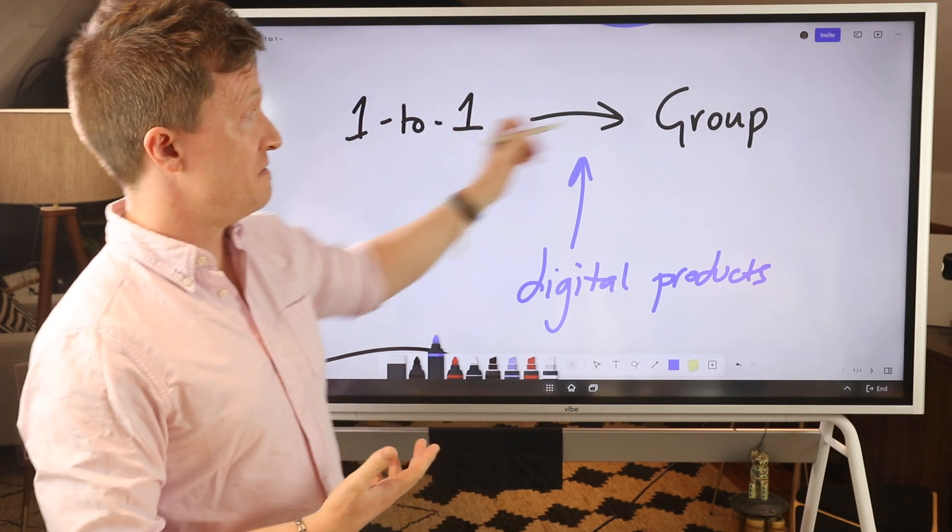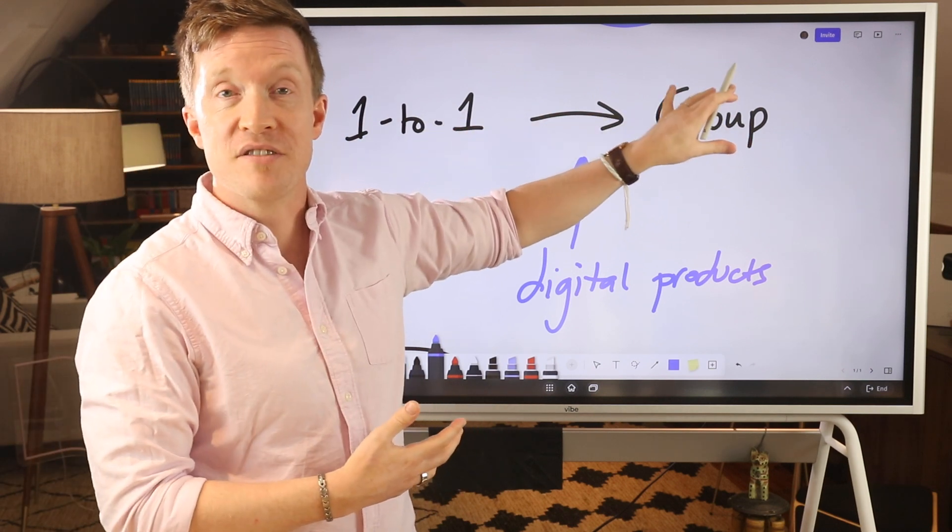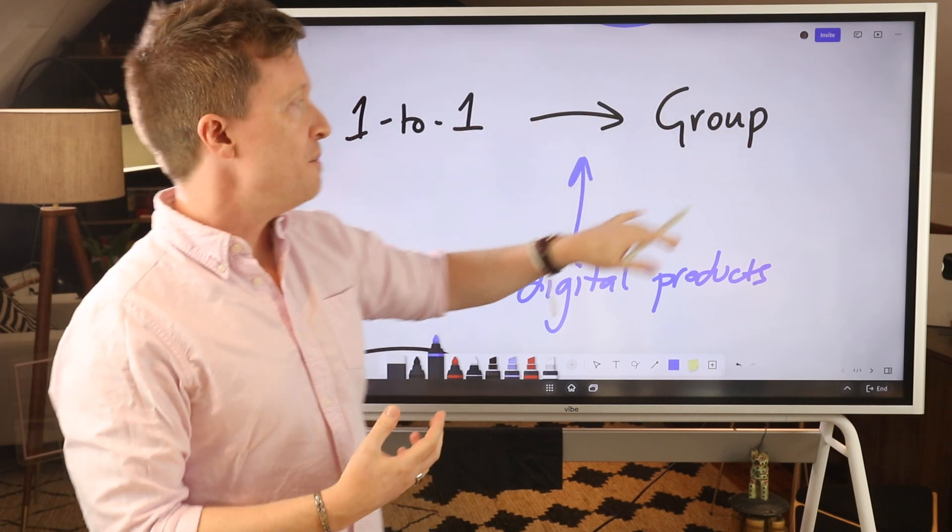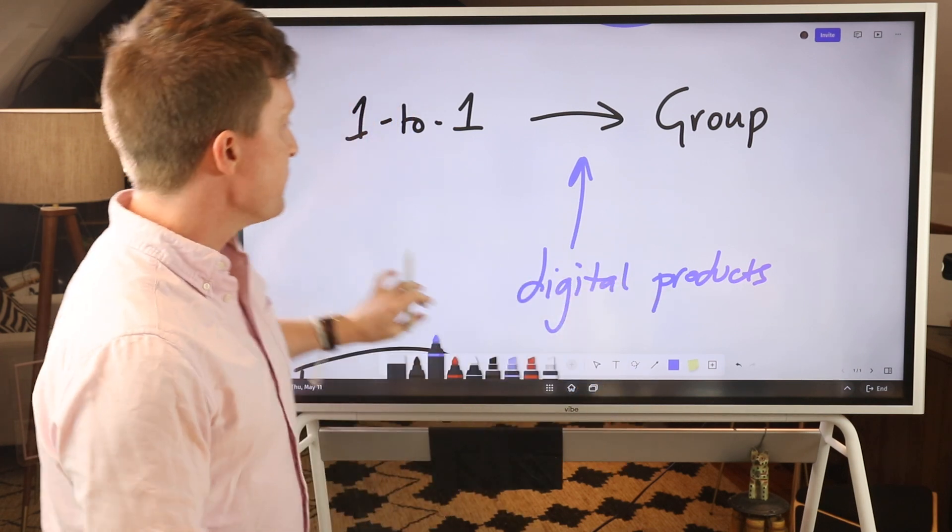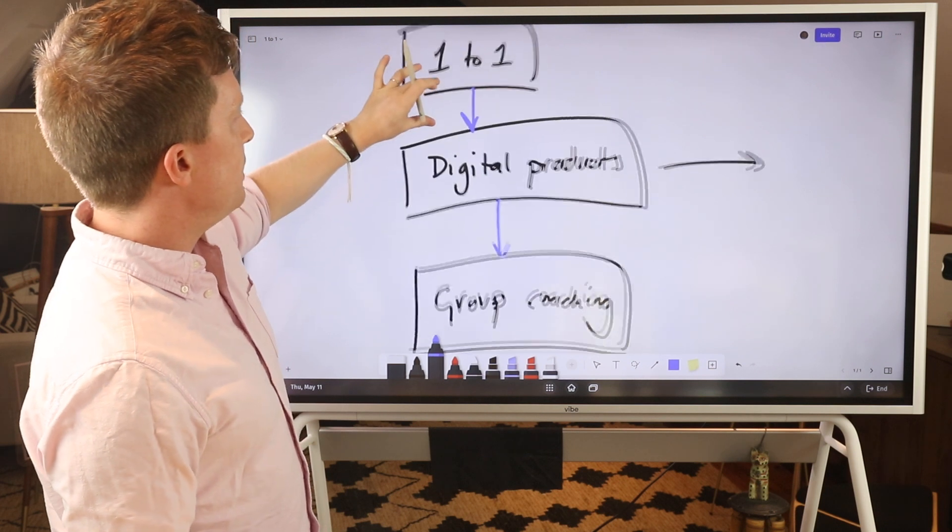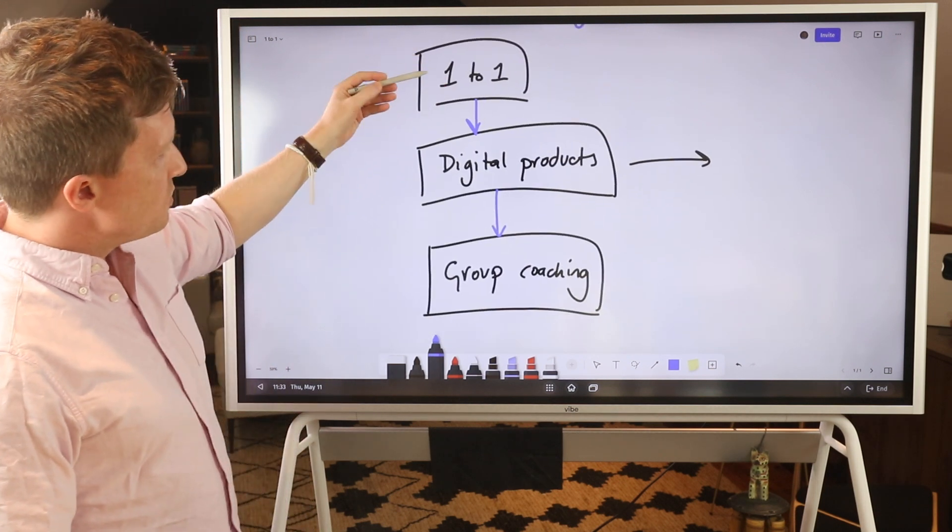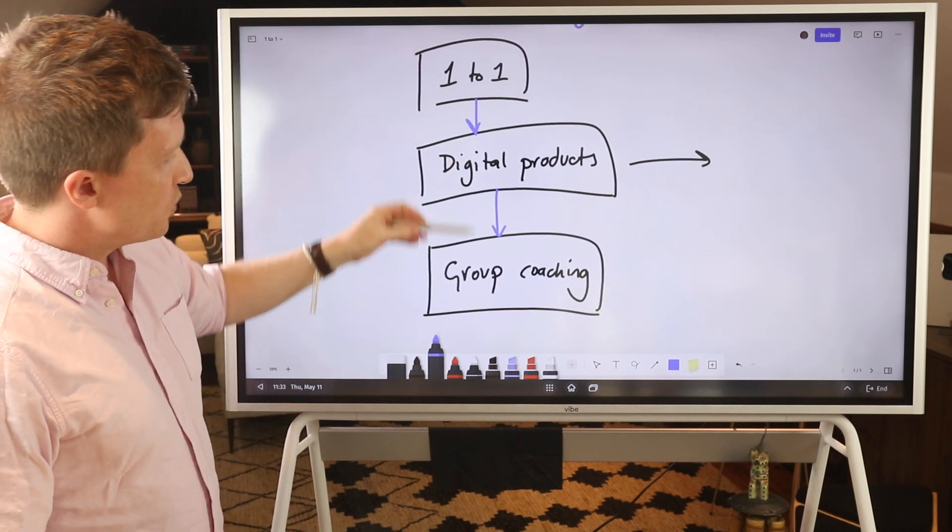So actually, I never needed, I never bothered to go to group sessions and to group classes at all, because the digital products and that side of the business was doing so well. And so this is the order, the sequencing, right? One-to-one to digital products to group coaching. So why does this work?